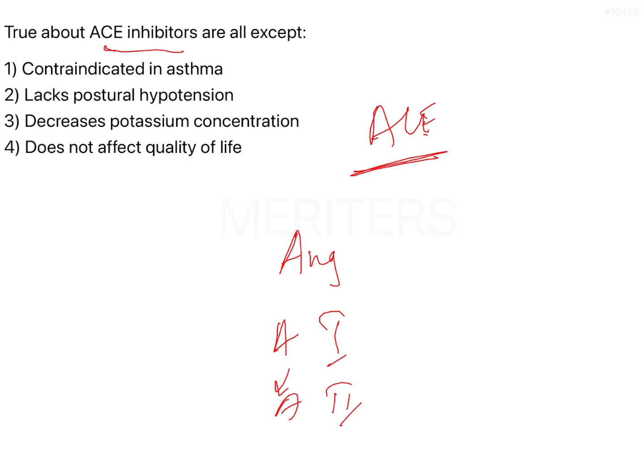This particular enzyme helps in contraction of the blood vessels, and as it causes contraction of the blood vessels, your blood pressure increases. Therefore, if you end up inhibiting the converting enzyme, there will be no production of angiotensin 1 as well as angiotensin 2, and as a result there will be no contraction of the blood vessels and no blood pressure rise.